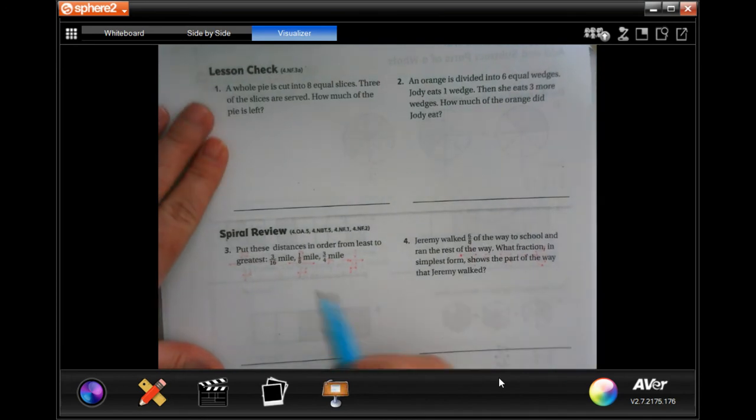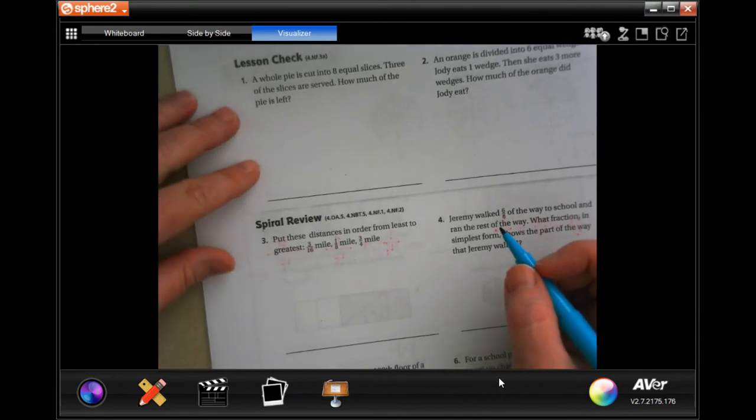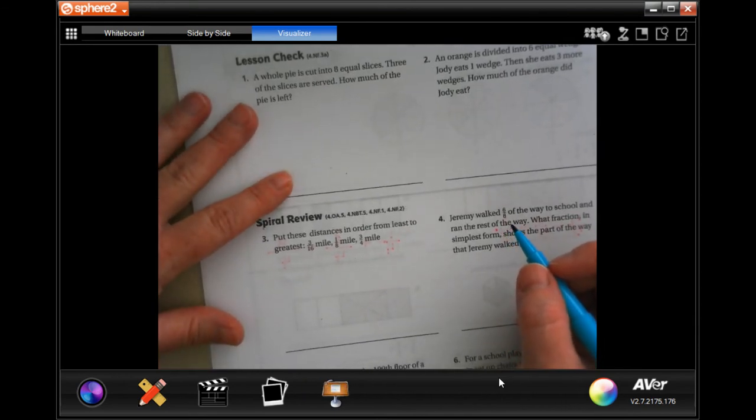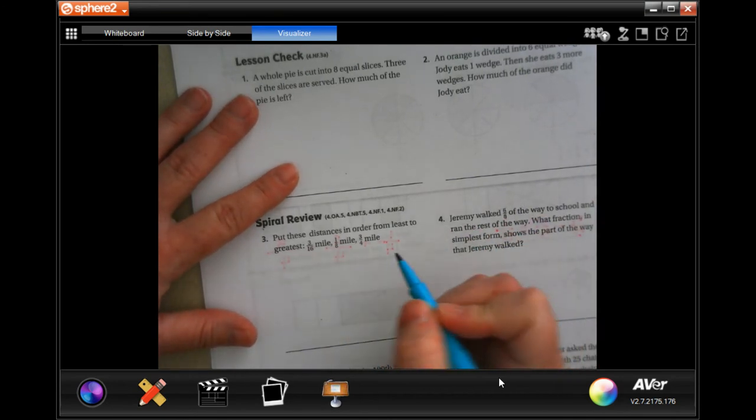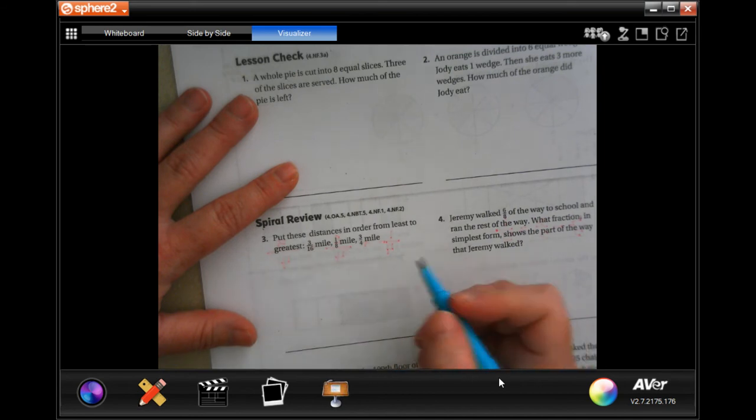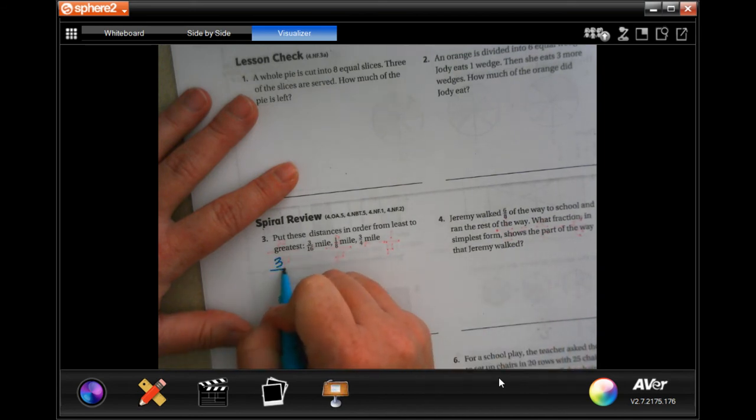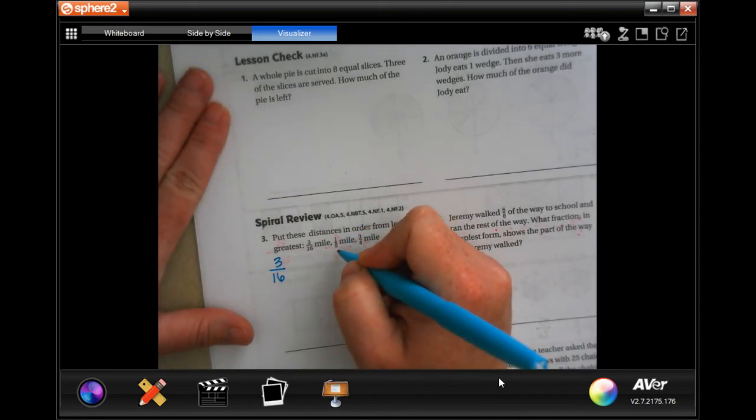We're gonna go down and do this spiral review. Let's put these distances in order from least to greatest. Well, you know in order to do that we need to have the same denominator. So let's see, the smallest denominator between 16, 8, and 4 is going to be 16, so we're going to have three sixteenths. In order to get 8 to 16 we have to multiply it by 2, 8 times 2 is 16, so then 1 times 2 is two sixteenths.